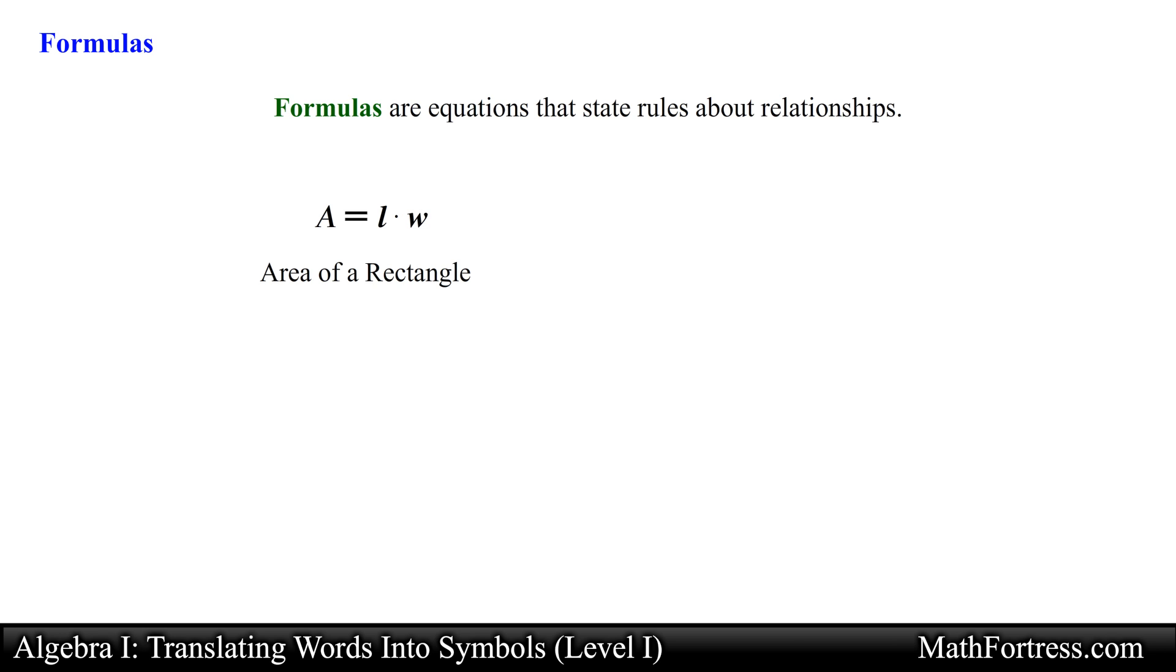In addition the formula to find the perimeter of a rectangle is expressed as follows. 2 times the length plus 2 times the width. In other words you add the length of all the sides of the rectangle.